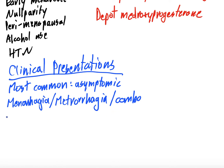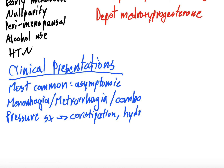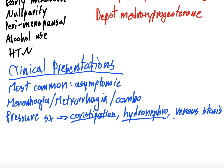You can also get pressure symptoms if you have a mass growing in your uterus. This can cause constipation if there's pressure on the bowels, hydronephrosis if it obstructs the ureters, and venous stasis if it's pressing on the IVC. So think about pressure symptoms: bowel pressure gives constipation, ureteral pressure gives hydronephrosis, and inferior vena cava pressure can give venous stasis.